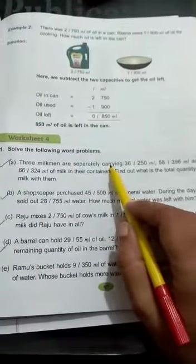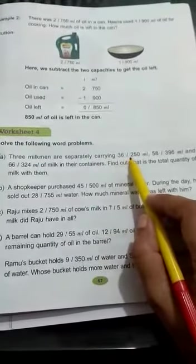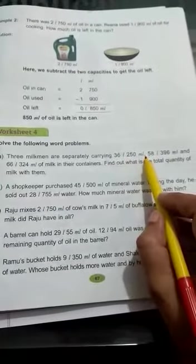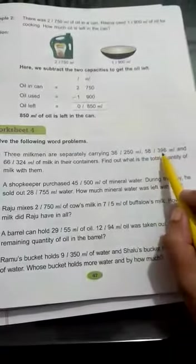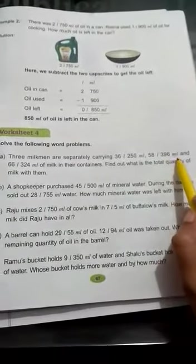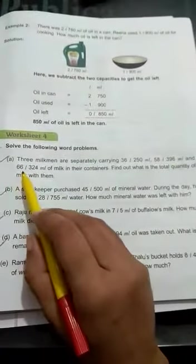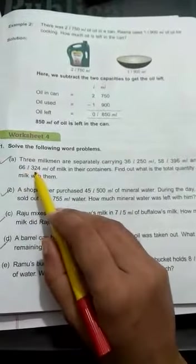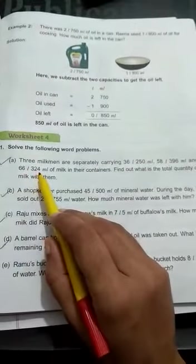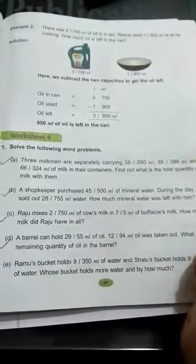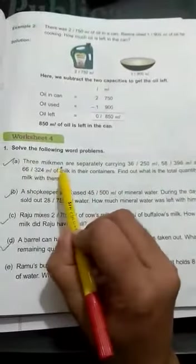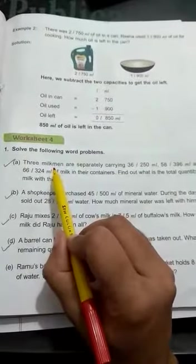Let's start with part A. Three milkmen are separately carrying 36 liter 250 milliliter, 58 liter 396 milliliter, and 66 liter 324 milliliter of milk in their containers. The milkmen have different containers.